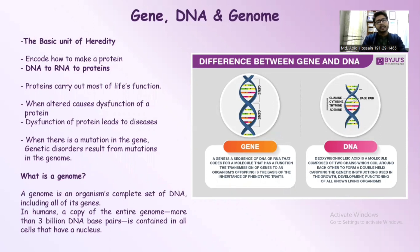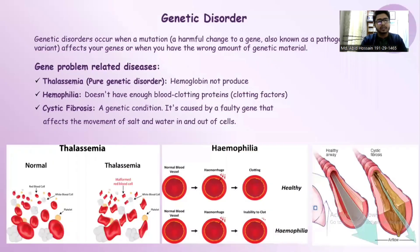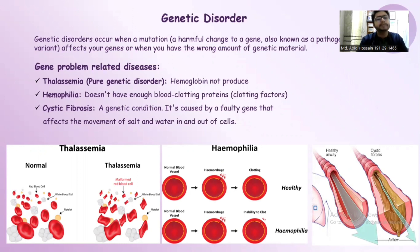If we consider the genome, a genome is an organism's complete set of DNA, including all of its genes. A genetic disorder occurs when a mutation or any kind of harmful change affects our genes, or when we have the wrong amount of genetic material. There are several gene-related diseases, like hemophilia, cystic fibrosis, thalassemia, etc.